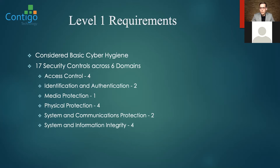Under the old process of the DFARS rule and the self-attestation of NIST 800-171, companies were basically saying yes, I am completing these practices. They would do a self-assessment — are we doing them, yes or no — and tell the government they're doing what they're supposed to do. We touched on this in the first webinar where there was an issue with 10 of the biggest primes being audited and nine of them failing. This is why we are now moving into the new process of maturity.